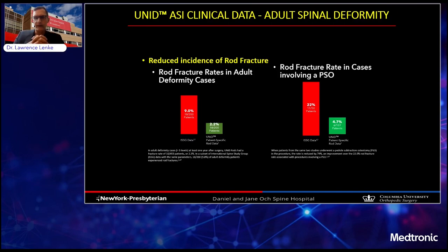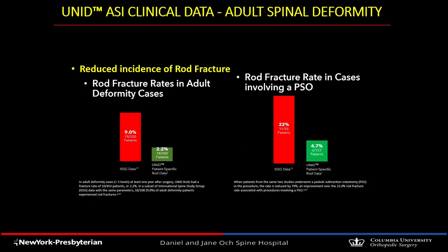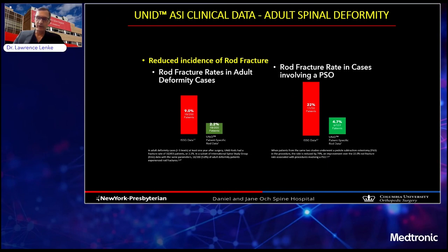To show a simple analysis of how this adaptive spine intelligence platform can help your surgeries: in an ISSG study, there was a reduced incidence of rod fracture in adult deformity cases. Once the UNID patient-specific rod platform was utilized, rod fracture decreased from 9% to 2.2% in general cases. Similarly, in PSO cases, rod fracture rates decreased from 22% to 4.7%. The only major change was the use of this new platform and the patient-specific rod — small studies, but an inkling of how this technology will help us get better short and long-term outcomes.